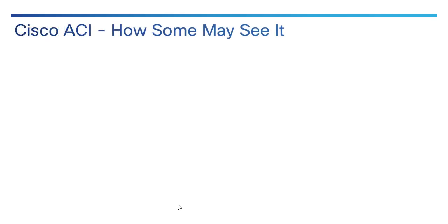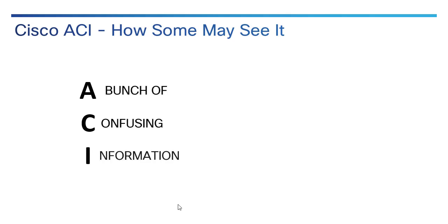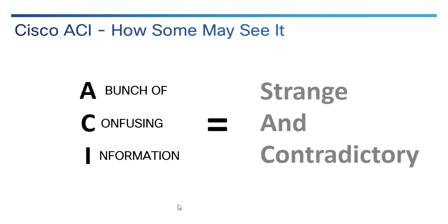So how do a lot of people see Cisco ACI? I myself, when I started with ACI, found it very disorienting and somewhat confusing. It took me a while to get my feet under me with regard to ACI. Lots of times, especially traditional network engineers, look at ACI and see a bunch of confusing information — things that seem to contradict the known laws of networking. Basically, it's strange and somewhat contradictory to a lot of us.